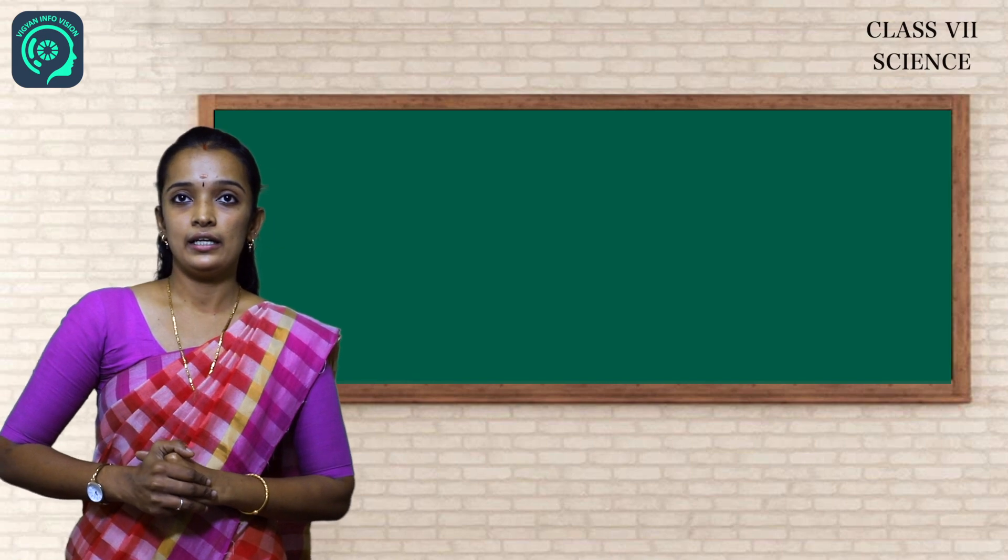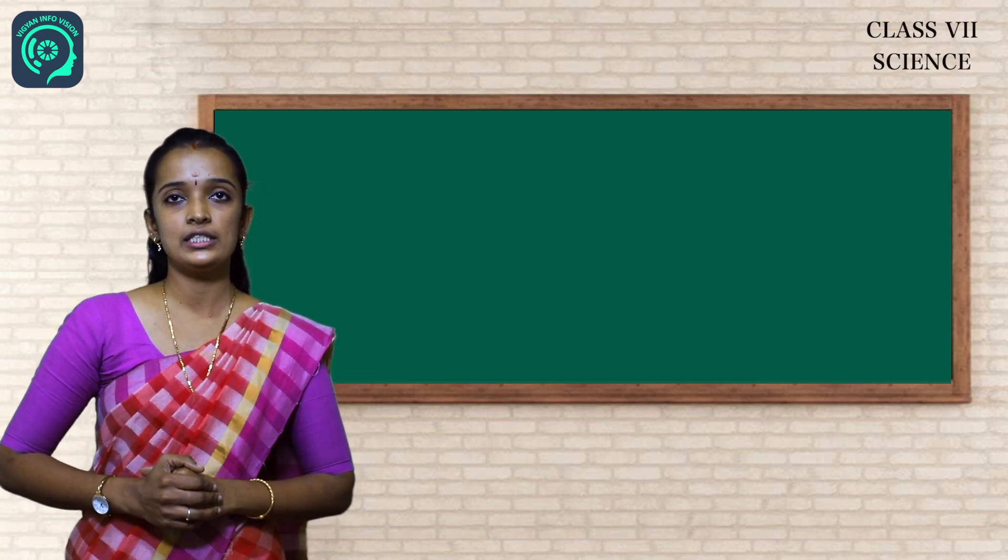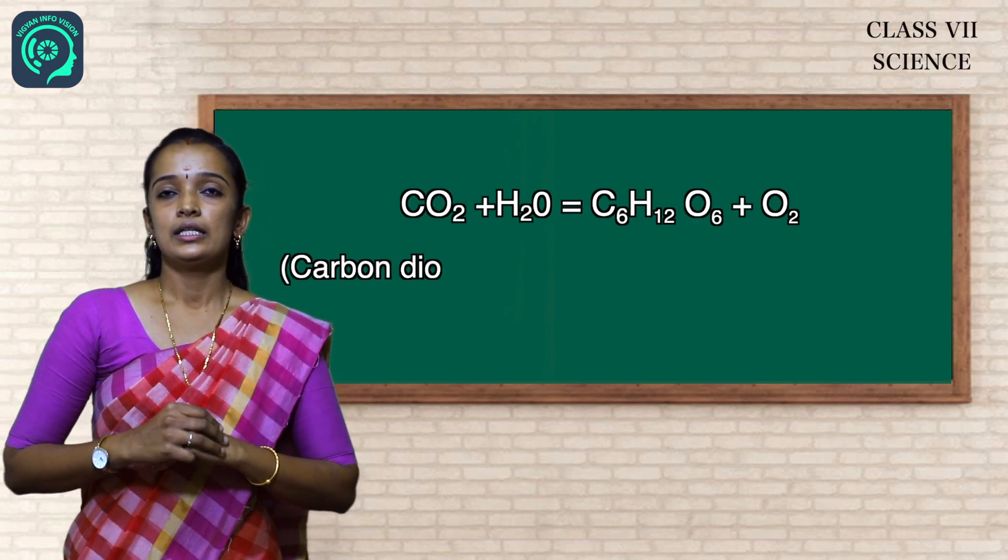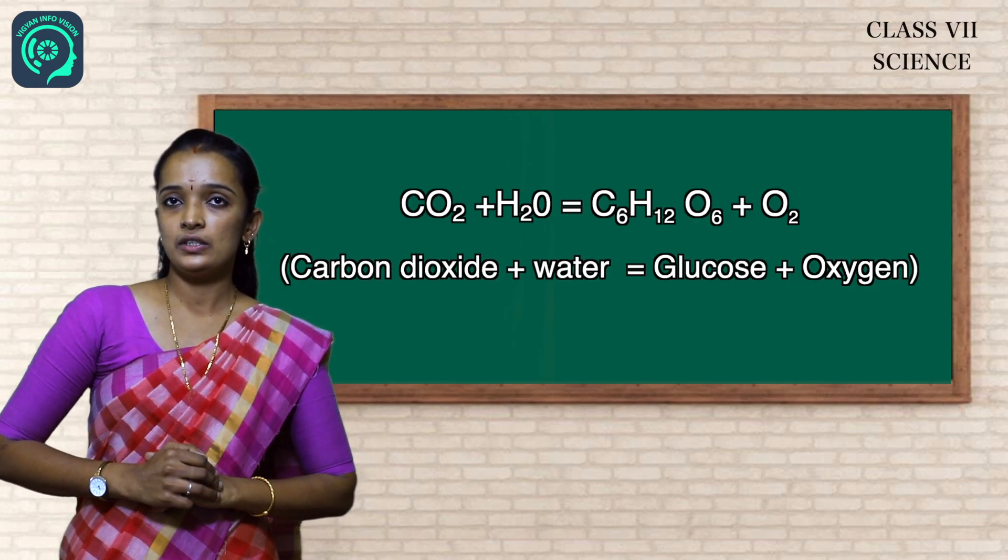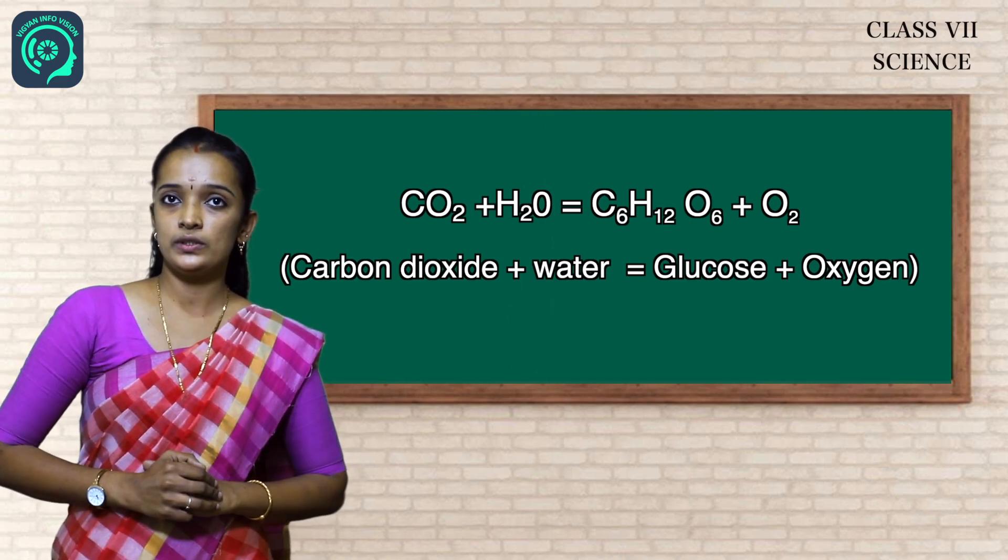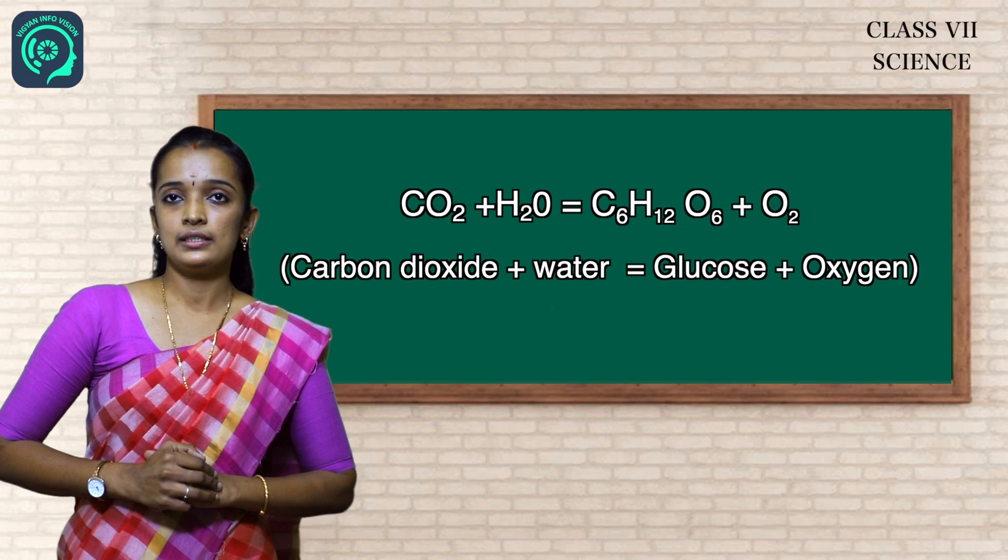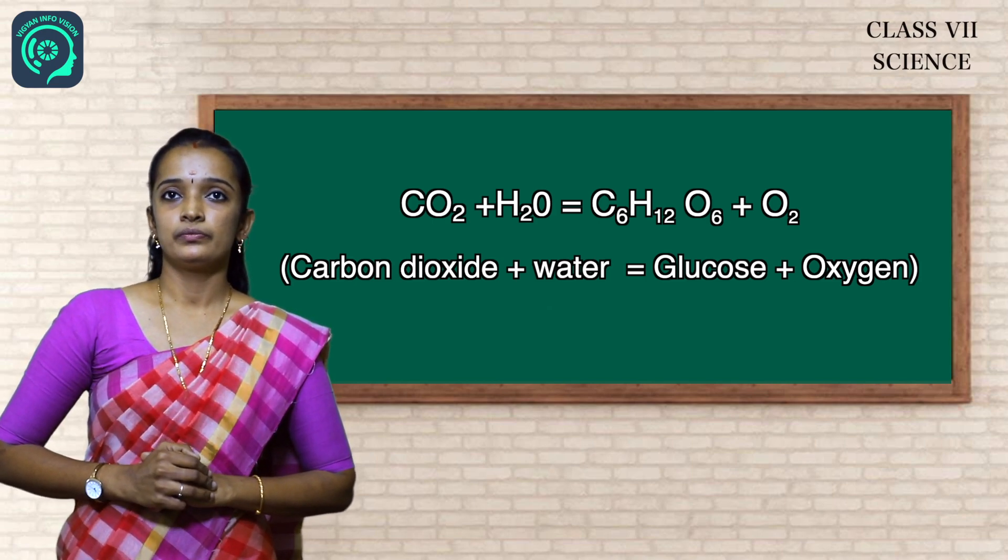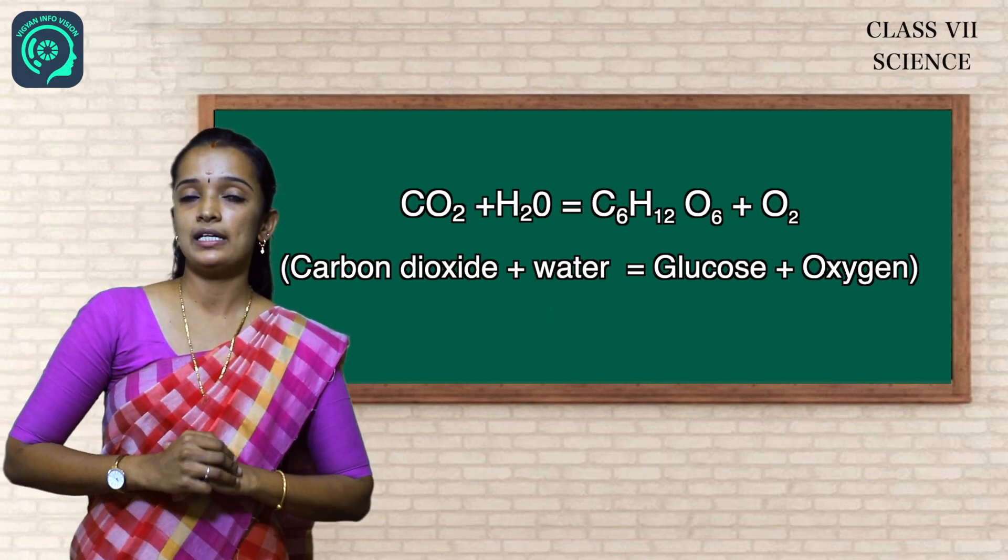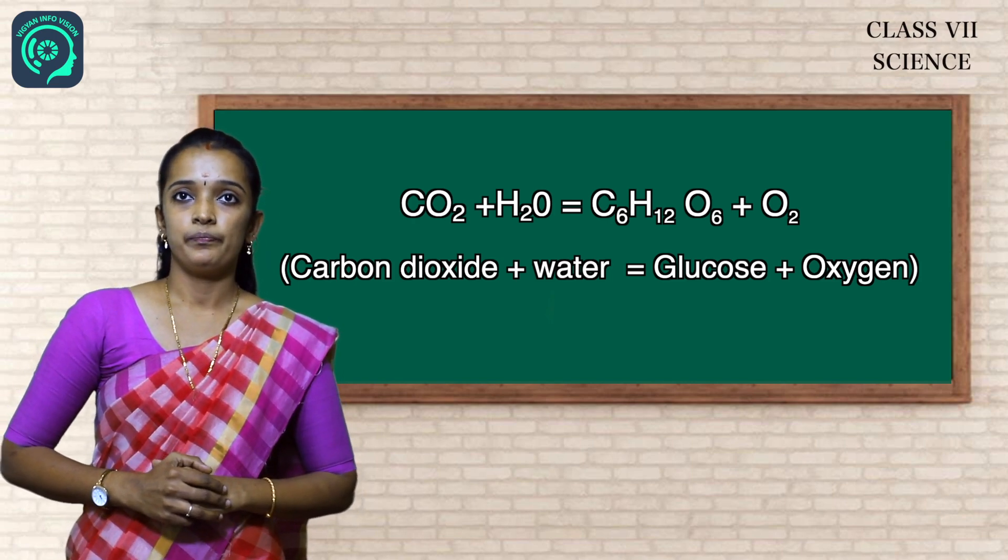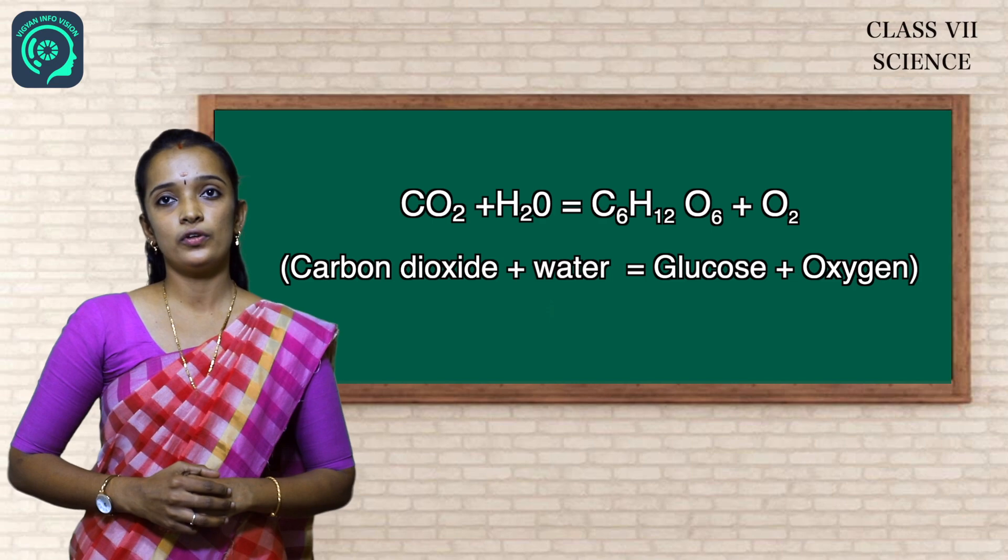Now we are going to learn the equation of photosynthesis. What is the equation? CO2 plus water gives C6H12O6 plus O2. That is carbon dioxide plus water gives glucose plus oxygen. That is the equation of photosynthesis.